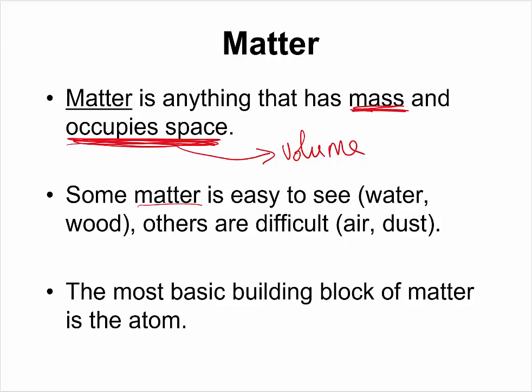Some pieces of matter are very easy to see — the things around us: the chair you are sitting on, the computer you are watching this on, your cell phone, the water you drink, the food you eat, and so on. Others are very difficult to see directly with our naked eyes, like the oxygen we breathe in or the carbon dioxide we exhale. But we know that they exist, and if they are in existence, then they are pieces of matter.